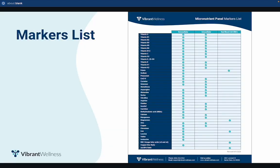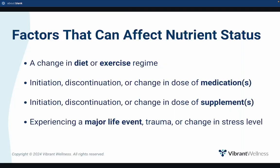Check out the markers list to learn whether cellular levels are white blood cell or red blood cell. Factors that can affect nutrient status include a change in diet or exercise regimen, initiation, discontinuation, or change in dose of medications or supplements, or experiencing a major life event, trauma, or change in stress level.